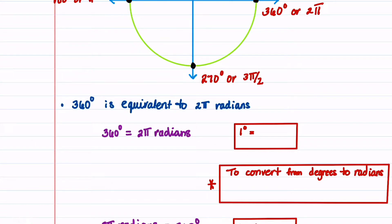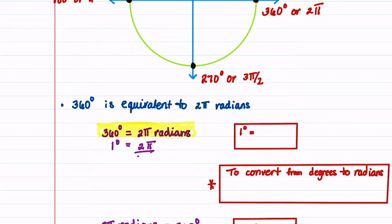To find a way to convert between degrees and radians, we're going to use the fact that 360 degrees is equivalent to 2 pi radians. If 360 degrees is 2 pi radians, we can divide both sides of the equation by 360, so we get that 1 degree is 2 pi over 360 radians. And if we simplify the right-hand side, that gives us 1 degree is equal to pi over 180 radians.